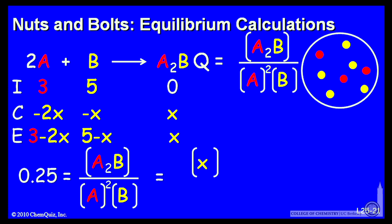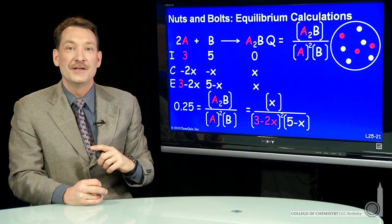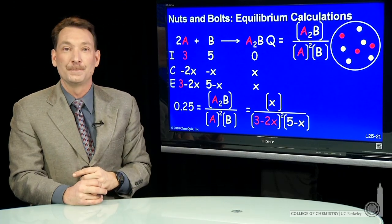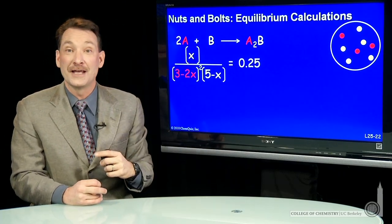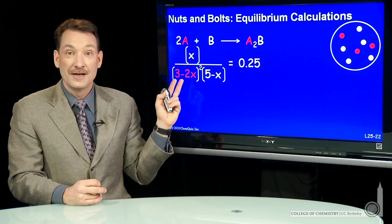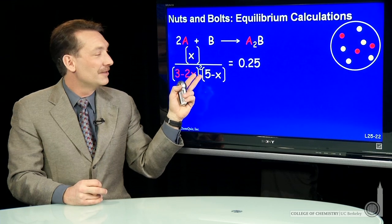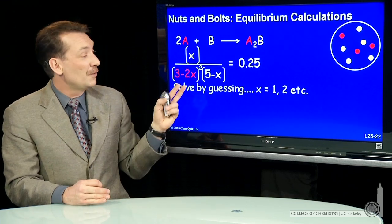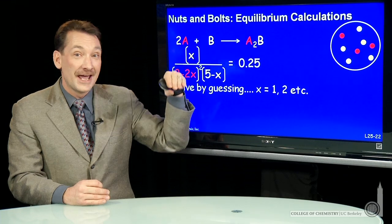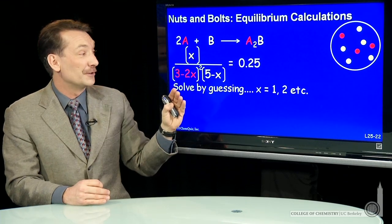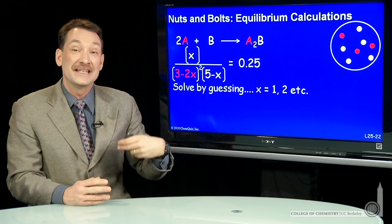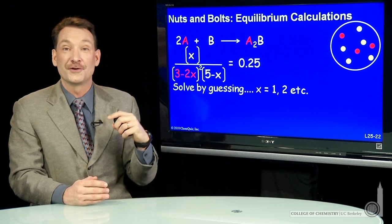So if I put those in, x is the partial pressure at equilibrium of A2B. The partial pressure 3 minus 2x is the partial pressure of A to the power 2, and B is 5 minus x at equilibrium. So now we need to solve this for x. If you look at that, it's actually a rather complicated expression in x. But it's kind of simple to solve if we use the guessing method. We can guess values for x and approach the appropriate value. So if we just guess x is 1 and then guess x is 2 and see if it solves for 0.25.